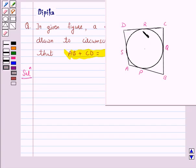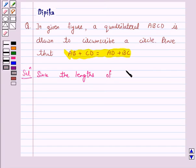Here in this figure, a quadrilateral ABCD is drawn to circumscribe a circle. Here we have four external points A, B, C and D from which tangents are drawn to the circle. Since the length of the tangents drawn from an external point to a circle are equal,